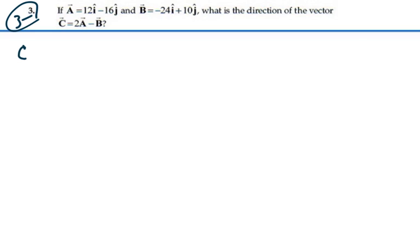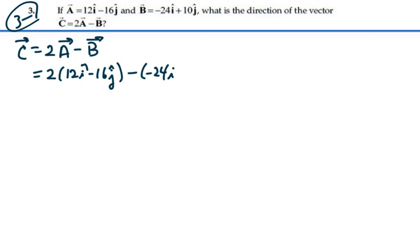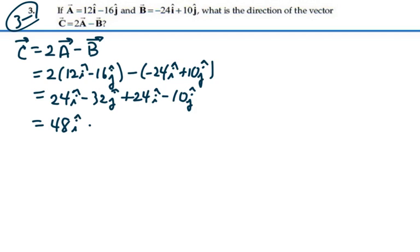Well, C is equal to 2A minus B. Let's find out what that vector is. That is 2 times 12i minus 16j for A, minus vector B, which is negative 24i plus 10j. So this is equal to 24i minus 32j minus negative B plus 24i and then minus 10j. So this is equal to 48i minus 42j.